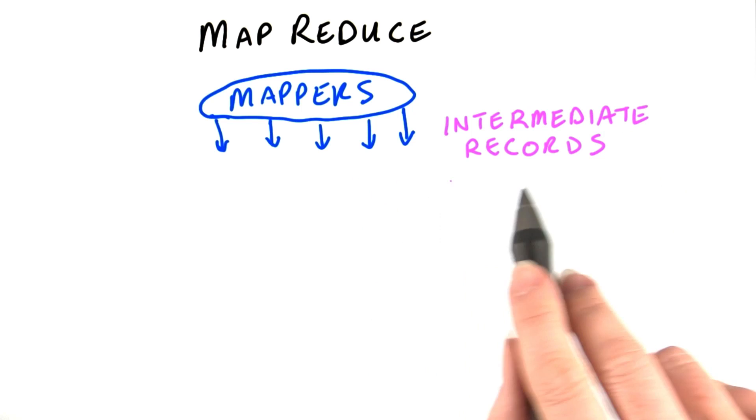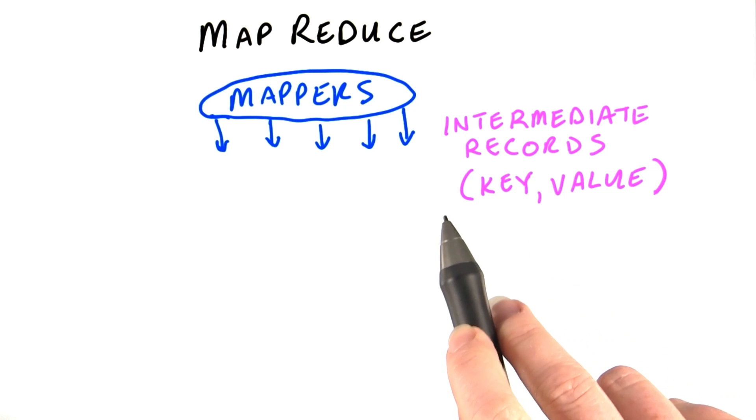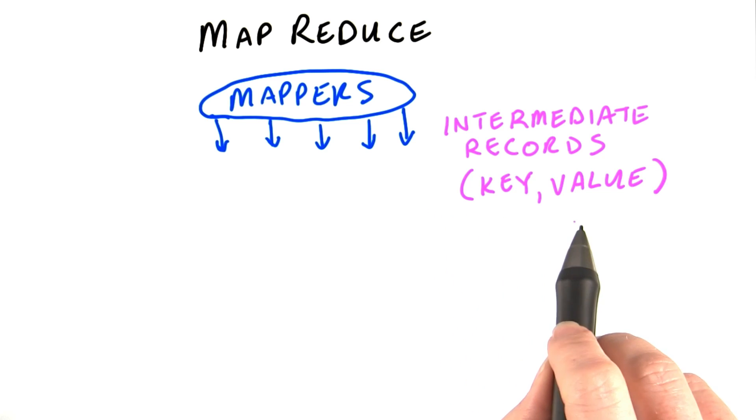We call that output the intermediate records. That's what we were writing on our index cards. Hadoop deals with all data in the form of key and value. So these records are actually keys and values.